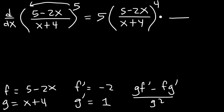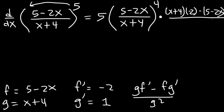The quotient rule formula is g times f prime minus f times g prime over g squared. So: x plus 4 times negative 2, minus 5 minus 2x times 1, over x plus 4 squared. Since g prime is 1, it doesn't change anything.